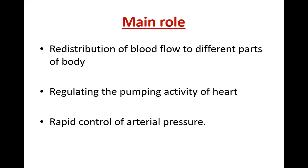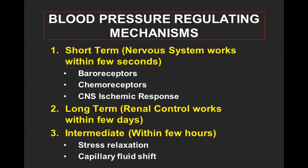The neural mechanism works by redistribution of blood flow to different parts of the body by causing vasoconstriction or vasodilation, and by regulating the pumping activity of the heart — either increasing or decreasing it based on requirement. Sympathetic if stimulated will cause increased pumping activity; parasympathetic will cause decrease. It also controls arterial blood pressure. Blood pressure regulating mechanisms can be classified into short-term, long-term, and intermediate-term. The short-term mechanisms that instantly come into play are baroreceptors, chemoreceptors, and CNS ischemic response.